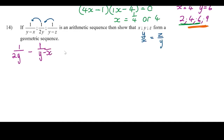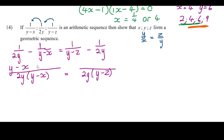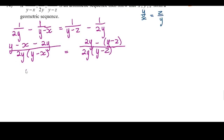So 1/(2y) − 1/(y−x) must equal 1/(y−z) − 1/(2y). This is quite tricky algebraically. We use a common denominator of 2y(y−x) on the left side and 2y(y−z) on the right side, then rewrite each fraction accordingly — multiplying numerators and denominators appropriately to combine terms.